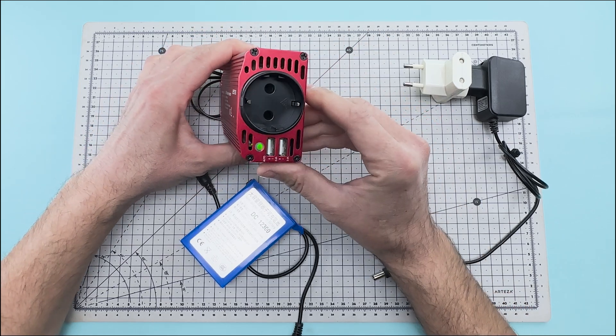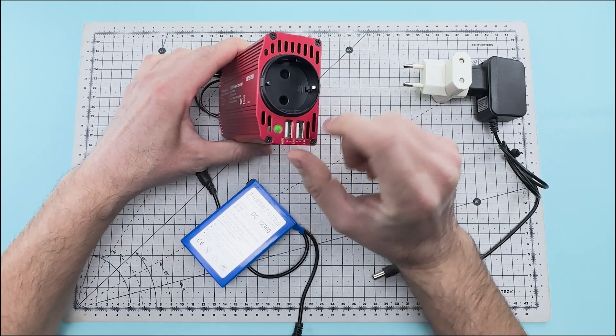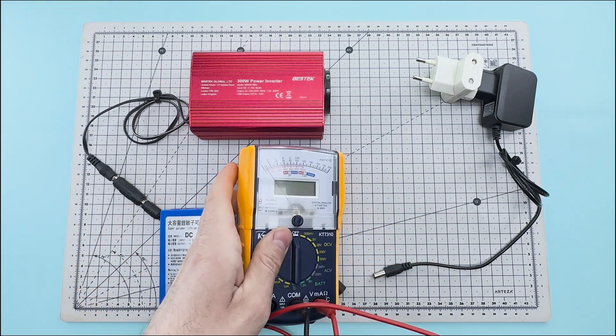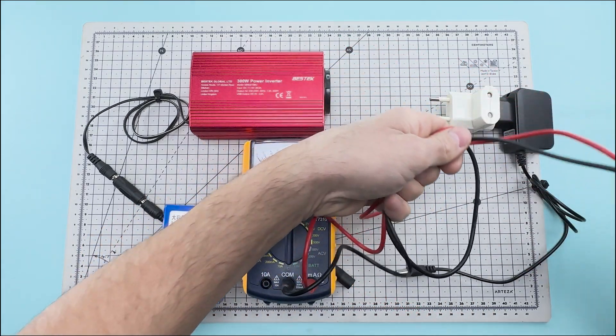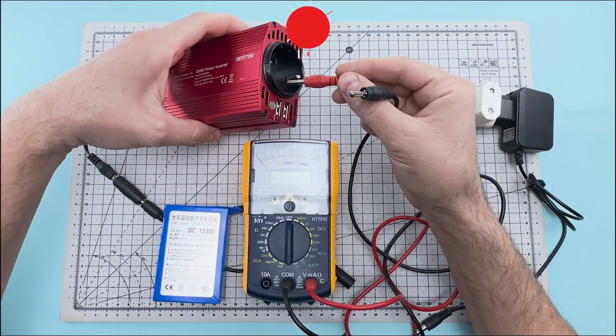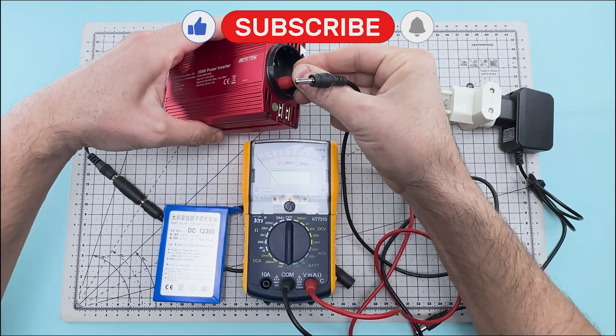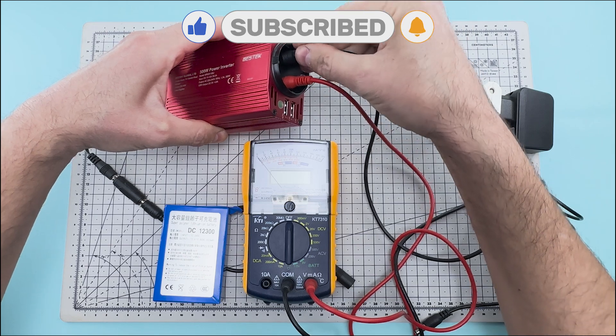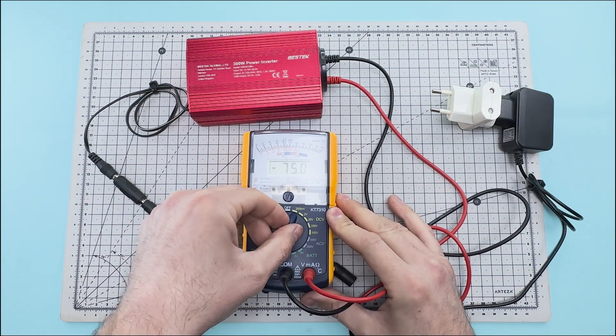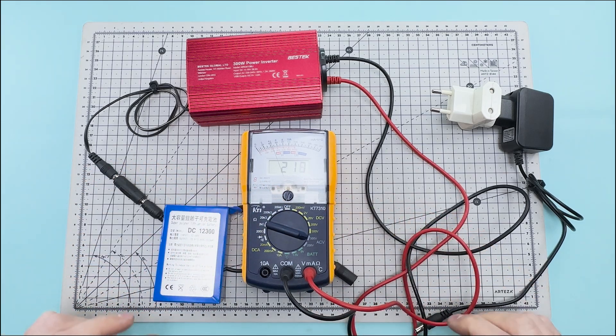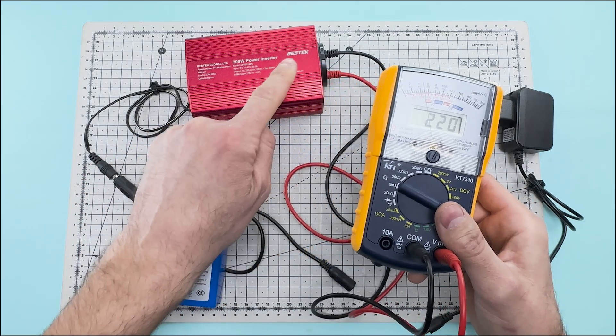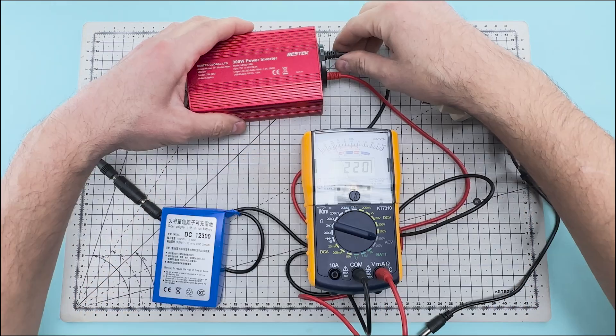Now the power inverter will transform the voltage from the lithium battery. We are going to use a volt meter to measure the output voltage of the power inverter. You can see that we have an output of 220 volts of alternating current.